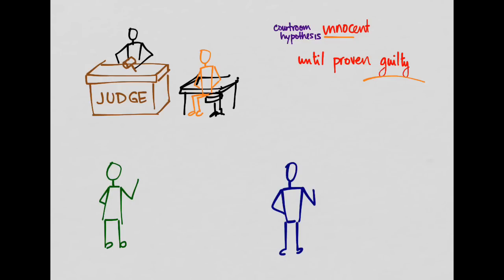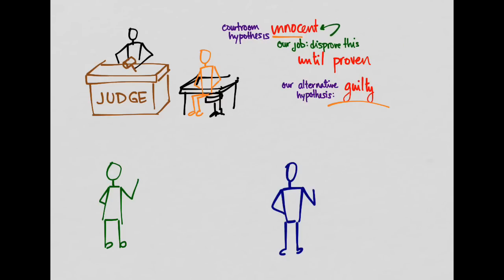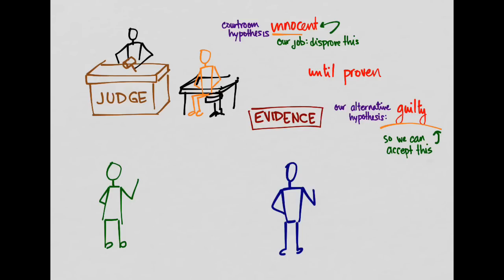It is our job as the prosecutor to disprove this. If we're able to do that, we can accept our alternative hypothesis — that he is guilty. We use the evidence at our disposal to convince the jury and judge that if this guy is innocent, then the evidence we found would be very unlikely. Since we did find this evidence, that means he's probably not innocent.